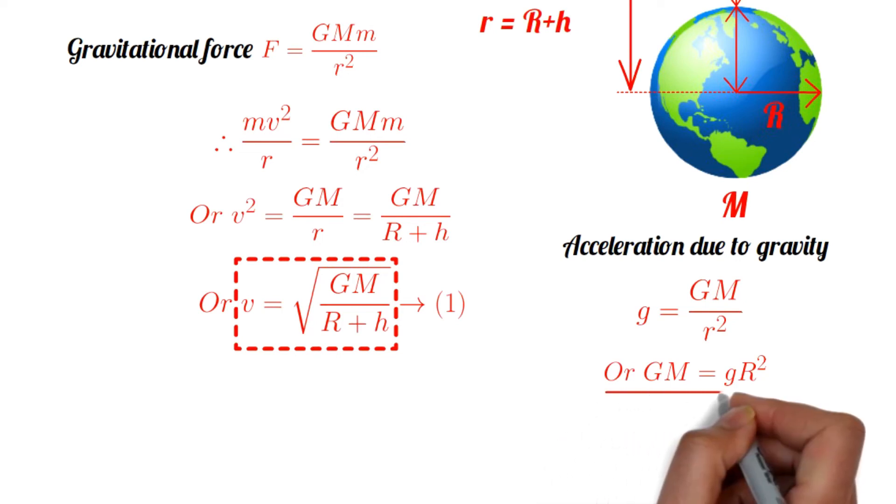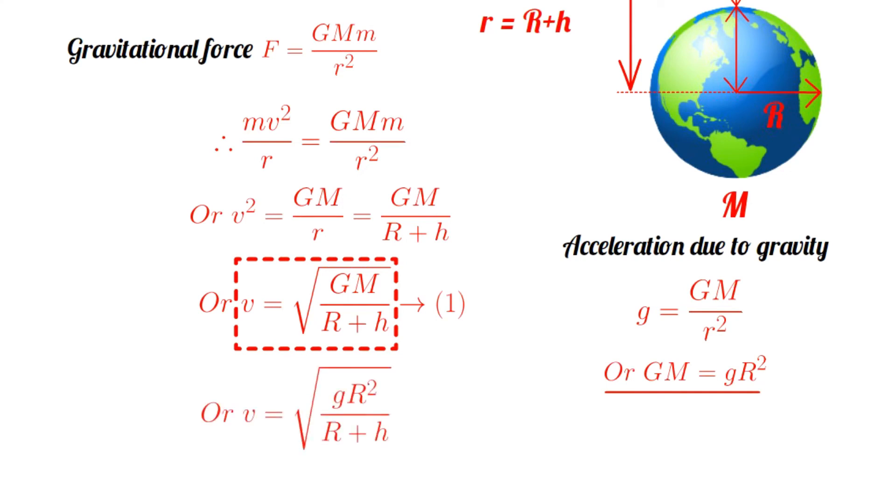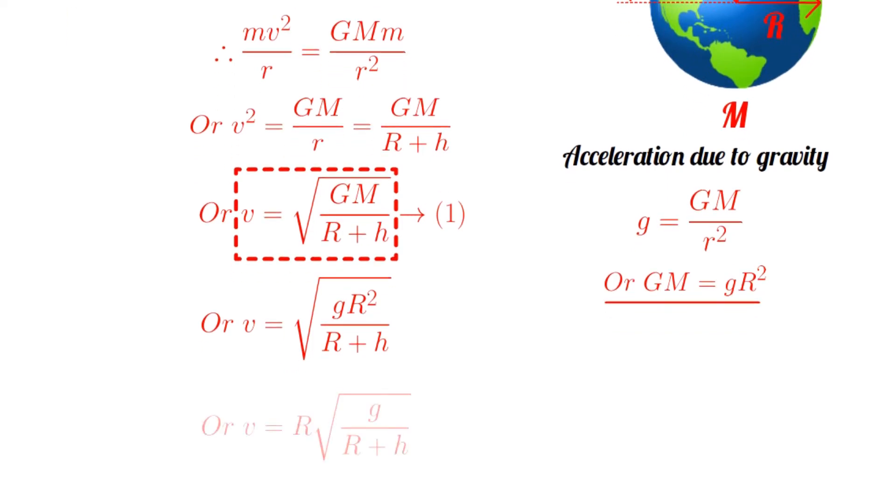Now by substituting the value of GM in equation number 1, we get small v equals root over small g capital R squared by capital R plus small h, or v equals capital R into root over small g by capital R plus small h. This is also the formula for the orbital velocity of an artificial satellite orbiting the Earth.